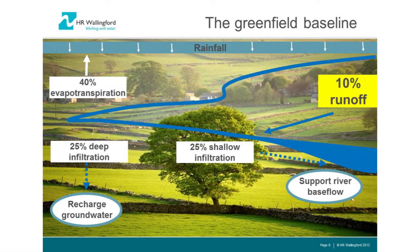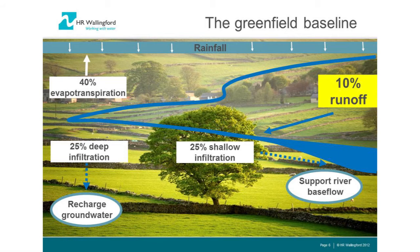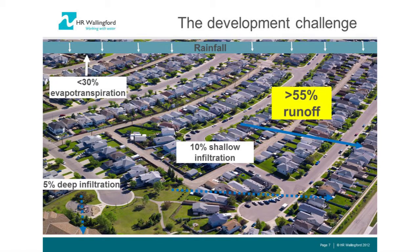In a more quantitative approach — putting some numbers to what's going on — of the rainfall that falls on our catchments, almost 40% is returned to the atmosphere by evapotranspiration. About 25% helps recharge our groundwater, and another 25% finds its way into rivers, sustaining the base flows needed to support the ecology and morphology of the river on a continuous basis.